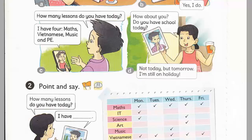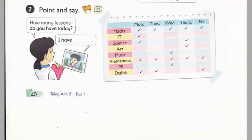I'm still on holiday. Page 40, Activity 2. Point and say. How many lessons do you have today? I have Maths, IT, Science, Vietnamese, and English.